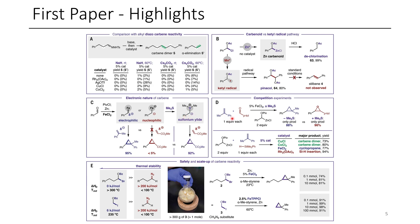Another example of this is shown here. When dimethyl sulfide is absent, they get a cyclopropanation-type product, although when they add dimethyl sulfide, they're able to do an addition into this aldehyde to give this epoxide-type product through a Corey-Chaykovsky reaction.